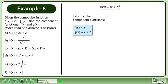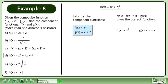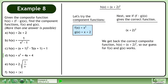Let's try component functions f and g. Next, see if f gives the correct function. Plug g into f. We get back the correct composite function h equals x plus 2 squared, so our guess for f and g works.